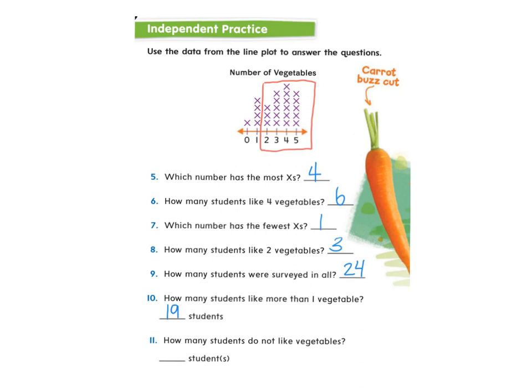You also could have gotten that answer by just counting all of the X's in that range. How many students do not like vegetables? I'm looking at this student down here that doesn't like any vegetables whatsoever — just one student. All right, thanks for watching.